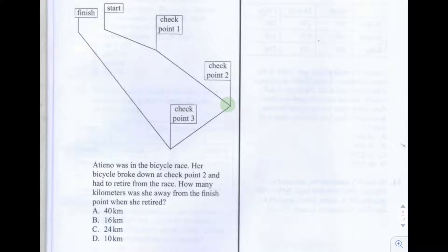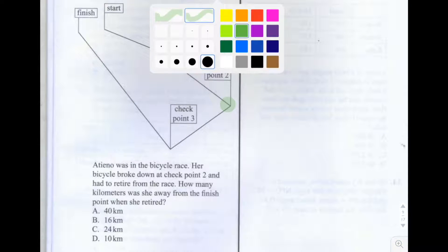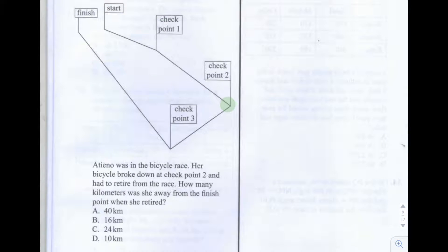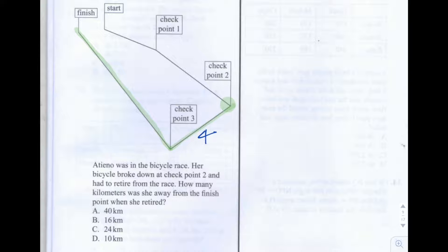The first thing I did is work out how much further she would have to travel to complete the race. She would have to travel from checkpoint 2 to checkpoint 3, and then the further distance from checkpoint 3 to the finish line. I measured these two distances. For the distance between checkpoint 2 and checkpoint 3, I got 4 centimetres. For the distance between checkpoint 3 and the finish line, I got 8 centimetres.